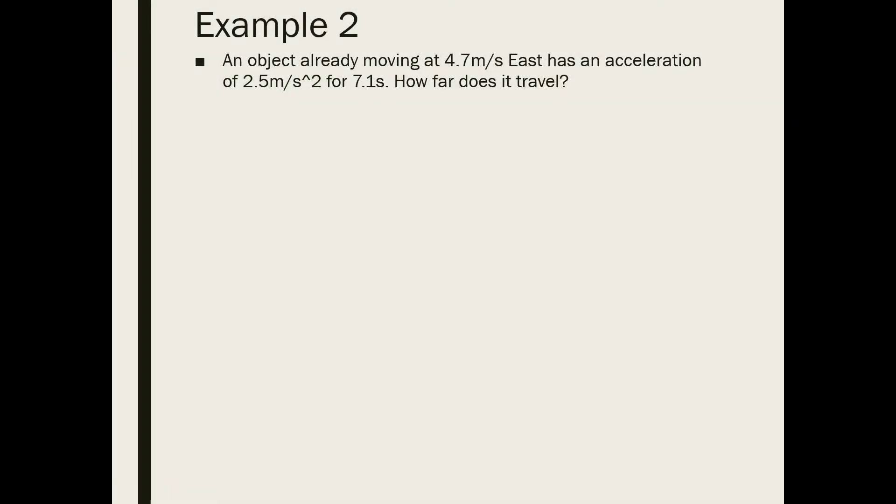Let's try one more example. An object already moving at 4.7 meters per second east has an acceleration of 2.5 meters per second squared for 7.1 seconds. How far does it travel? Since the object is already moving at 4.7 meters per second east, this is the initial velocity. The acceleration is 2.5 meters per second squared. The time is 7.1 seconds. Again, it's asking how far it travels, which is referring to the displacement.